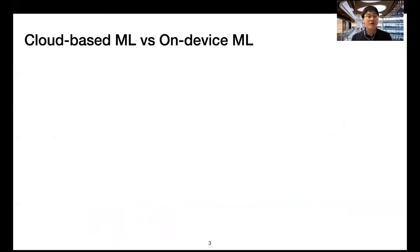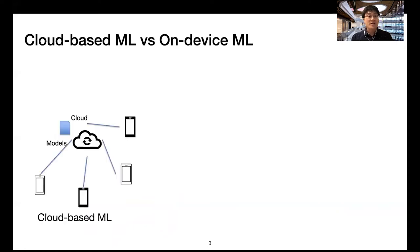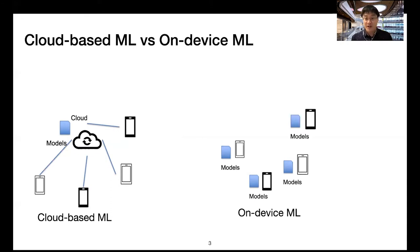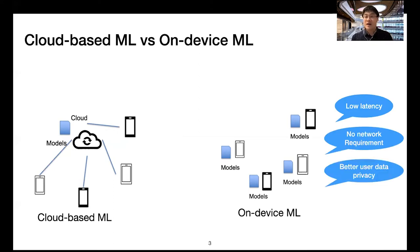There are two types of machine learning services on smartphones: cloud-based machine learning and on-device machine learning. For cloud-based machine learning, the models are stored in the cloud, and smartphones send a machine learning request to the model in the cloud and get results. For on-device machine learning, the models are stored on each individual smartphone. There are several benefits, like low latency, low network requirements, and avoiding sending user-private data to the cloud, so it has better user data privacy.